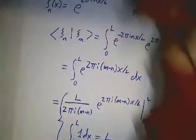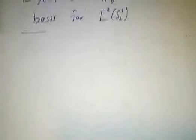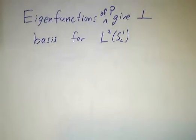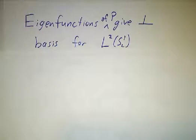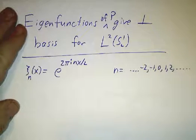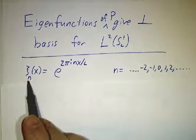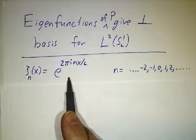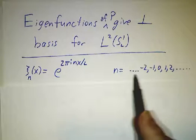Now, these eigenfunctions of our operator p give a nice orthogonal basis for L². So here are our eigenfunctions: e to the 2π n over L where n is any integer, positive or negative.